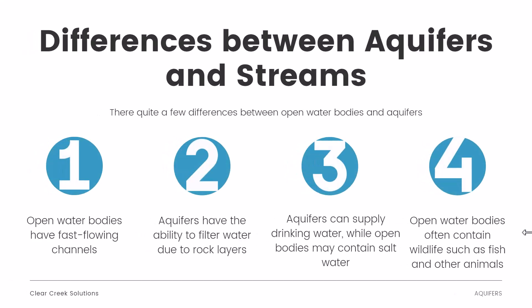What are the differences between aquifers and streams? Open water bodies have fast-flowing channels, while aquifers filter water as it seeps through rock layers. Aquifers can supply drinking water, while open bodies may contain saltwater such as oceans. Open water bodies often contain wildlife such as fish and other animals, whereas aquifers typically do not.